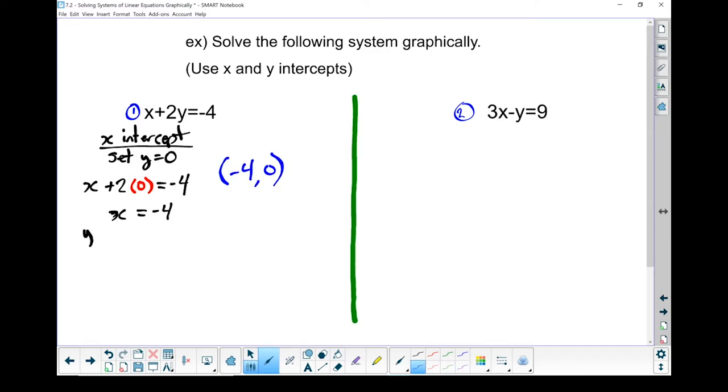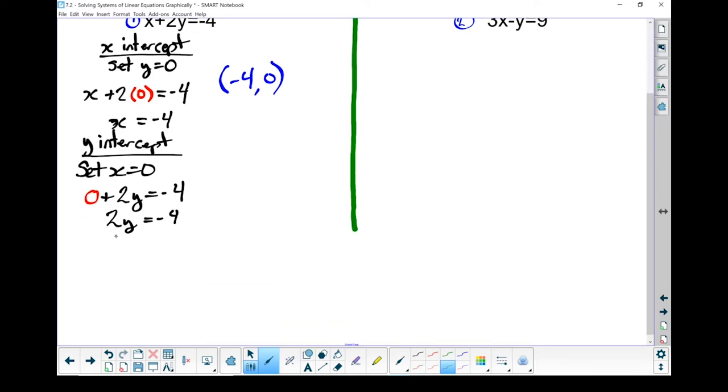Let's find the y-intercept. To find the y-intercept, we're going to set x to equal 0. Anywhere where there's an x in the equation, I'm going to swap it out for a 0. So I've got 2y equals minus 4. To get that 2 out from in front of the y, I'm going to divide both sides by 2. Those ones cancel out. I've got y equals negative 4 divided by 2, which gives me minus 2. So it crosses the y-axis at negative 2. The coordinates of that point are 0 on the x, minus 2 on the y.